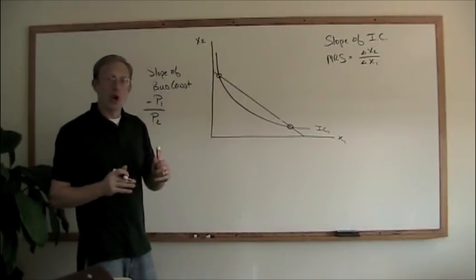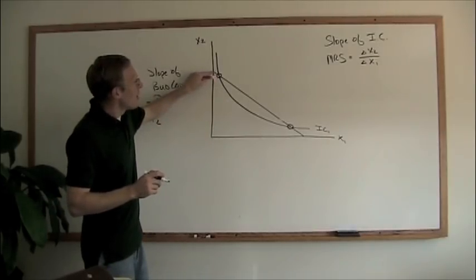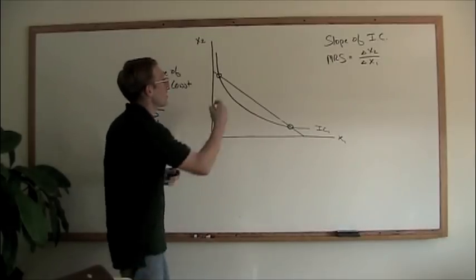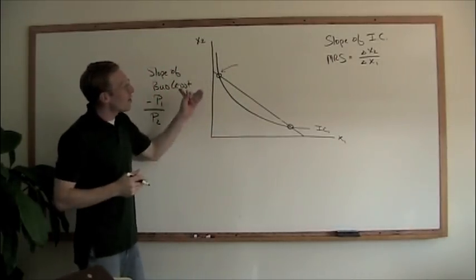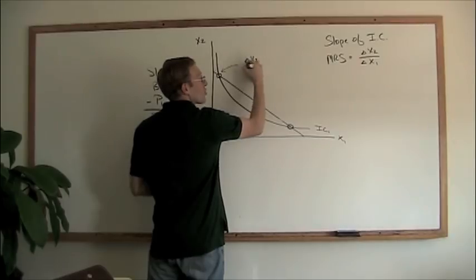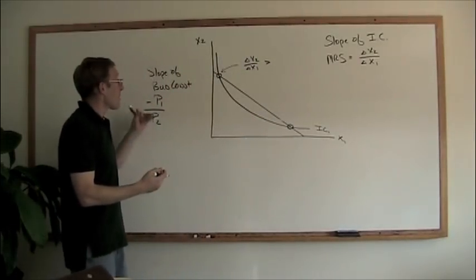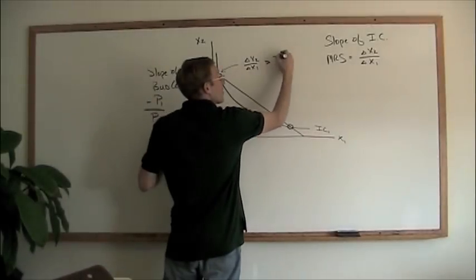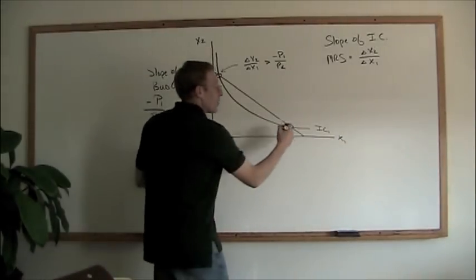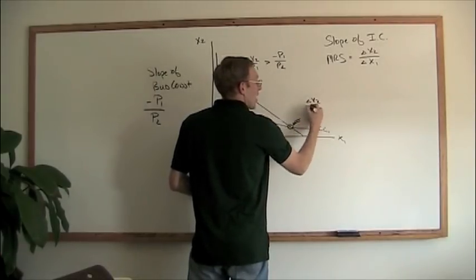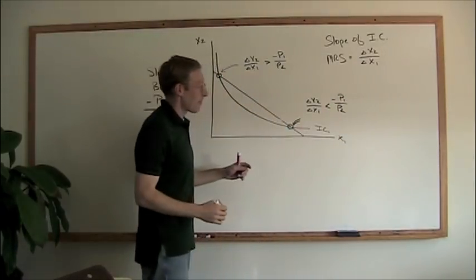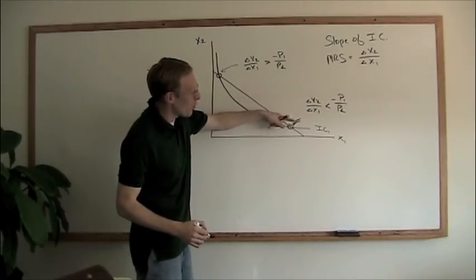If you look at those two intersection points, one thing you'll notice is that the budget constraint and the indifference curve don't have the same slope. Up at the upper point, the indifference curve is steeper — the marginal rate of substitution, or delta X2 over delta X1, is greater than the slope of the budget constraint, which is negative P1 over P2. Down at the lower point, we have exactly the opposite: the marginal rate of substitution is less than the budget constraint slope, which is steeper there.